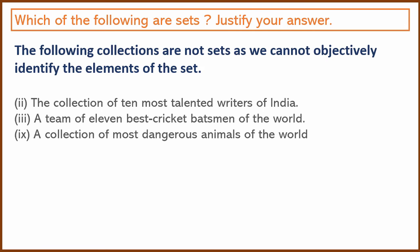Now, example 3: the collection of 10 most talented writers — who is talented? Different people may name different writers. Similarly, the collection of the best cricket batsmen and the collection of the most dangerous animals of the world are all subjective. I think my favourite cricketer is different from yours; my favourite writer is different; my most dangerous animal is different.